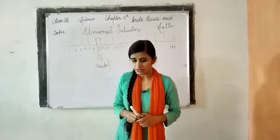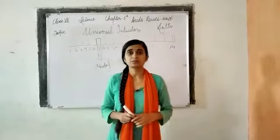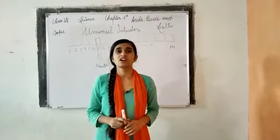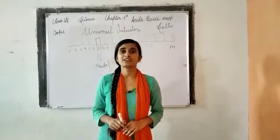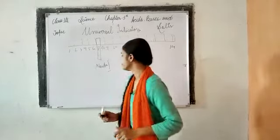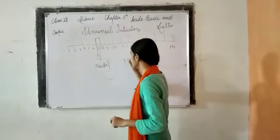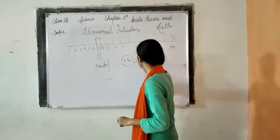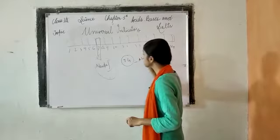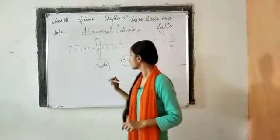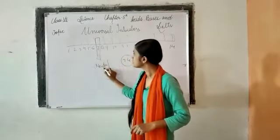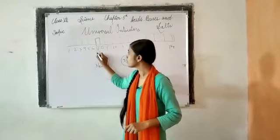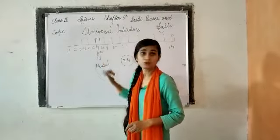Let me give you some important pH values to know. For objective questions, a commonly asked one is: what is the pH value of blood? That is 7.4 — the pH value of blood is 7.4, so learn it. And the pH value of water is 7.